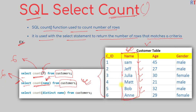We can also count the distinct number of values one particular column has. In that case we pass DISTINCT followed by the column name to the COUNT function, like SELECT COUNT(DISTINCT column_name) FROM customers. This query will return the distinct number of values the column has, so it will also return the number six.